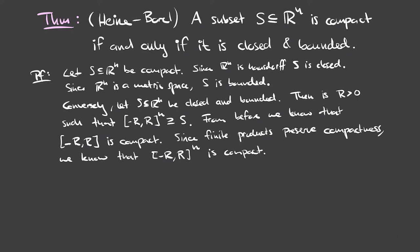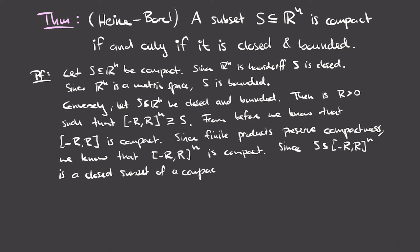We've shown the cube [−R, R]^n containing S is compact. Since S is a closed subset of this compact space, and closed subsets of compact spaces are themselves compact — a result from the previous video — it follows that S is compact. This completes the proof of the Heine-Borel theorem.